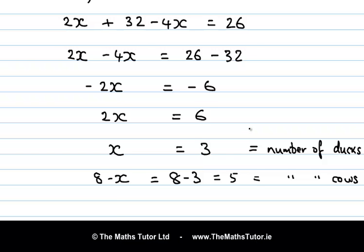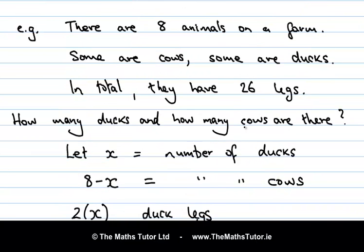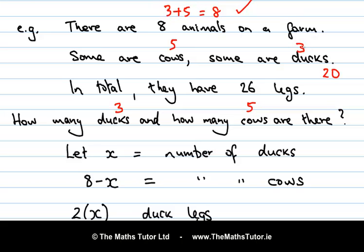Let's make sure we have answered the question we were asked. We were asked how many ducks and how many cows — we think it's 3 ducks and 5 cows. Does that make sense? There are 8 animals on the farm: 3 and 5 is 8, so that makes sense. In total they have 26 legs: 5 cows times 4 legs is 20, and 3 ducks times 2 legs is 6. Adding those together we get 26, so that makes sense. We have confidence that we have the right answer.